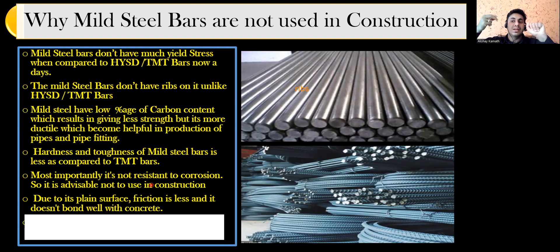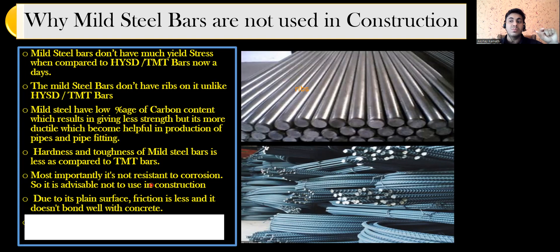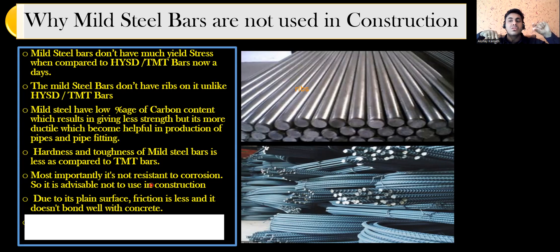Remember: greater carbon content means more strength and toughness, but less ductility. If asked which is more ductile — mild steel or HYSD bar — the answer is mild steel. The reason: HYSD has more strength, so it has more carbon, which means less ductility. Mild steel has less strength, so less carbon, and therefore higher ductility. Simple explanation.